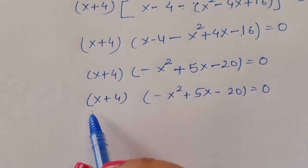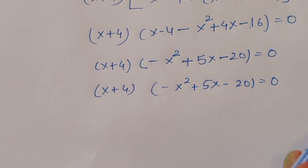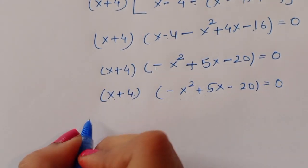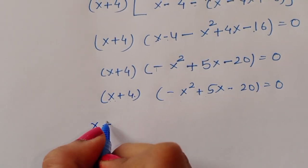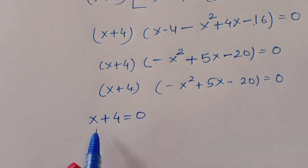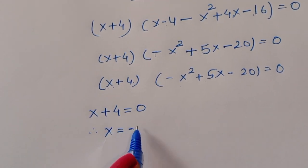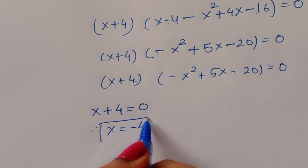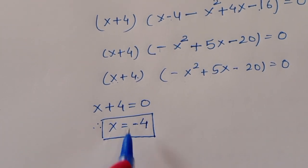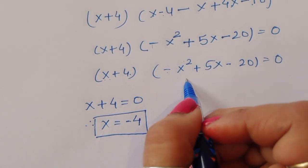So we have two equations: x + 4 = 0, and minus x squared plus 5x minus 20 = 0. Taking the first equation: x + 4 = 0, therefore x is equal to minus 4. This is the value of x from the first equation.